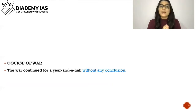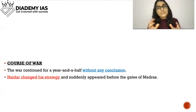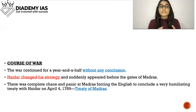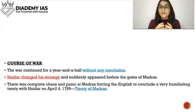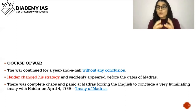The war continued for a year and a half without any conclusion. The Nizam and Marathas changed alliances, sometimes with Hyder Ali and sometimes with the British. Seeing this opportunity, Hyder Ali changed his strategy and suddenly appeared before the gates of Madras, which panicked the English. The English were forced to conclude a very humiliating treaty — the Treaty of Madras.